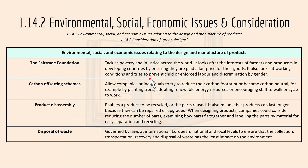Moving to 1.14.2: environmental, social and economic issues and consideration. The Fairtrade Foundation tackles poverty and injustice across the world. It looks after the interests of farmers and producers in developing countries by ensuring they are paid a fair price for their goods. It also looks at working conditions and tries to prevent child or forced labor and discrimination by gender. Carbon offsetting schemes allow companies or individuals to try to reduce their carbon footprint or become carbon neutral — for example by planting trees, adopting renewable energy resources, or encouraging staff to walk or cycle to work.